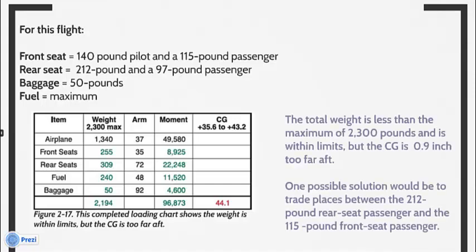With this loading, the total weight is less than the maximum of 2,300 pounds and is within limits, but the CG is 0.9 inch too far aft.